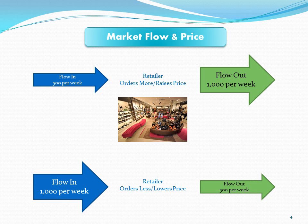Let's suppose we have the opposite situation — a thousand pairs flowing in per week but only 500 flowing out. In this case your inventories are building up, and that's costly because you have to buy the shoes but you're not getting the revenue to pay for it. So this would encourage you as a store owner to either cut your orders or lower your prices. The flows into and out of the market are going to affect inventory and business decisions.